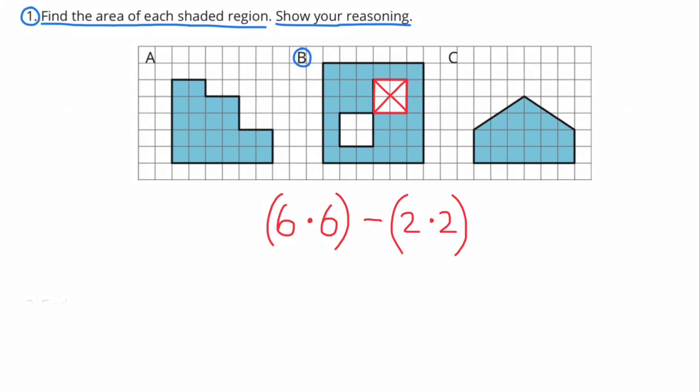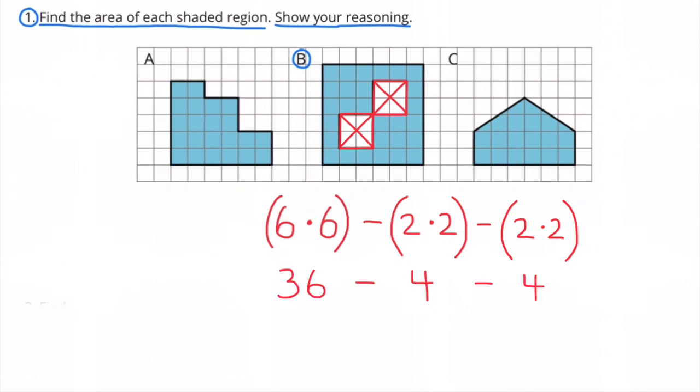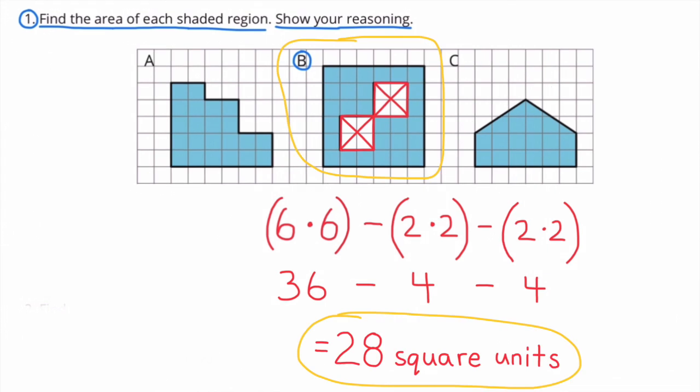So 6 times 6 minus 2 times 2 minus 2 times 2 equals 36 minus 4 minus 4. The area of B is 28 square units.